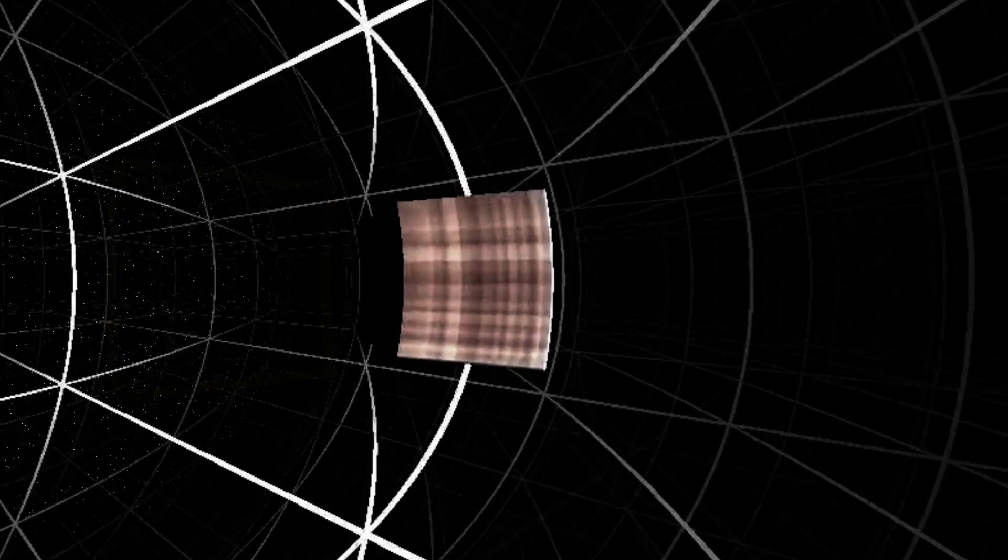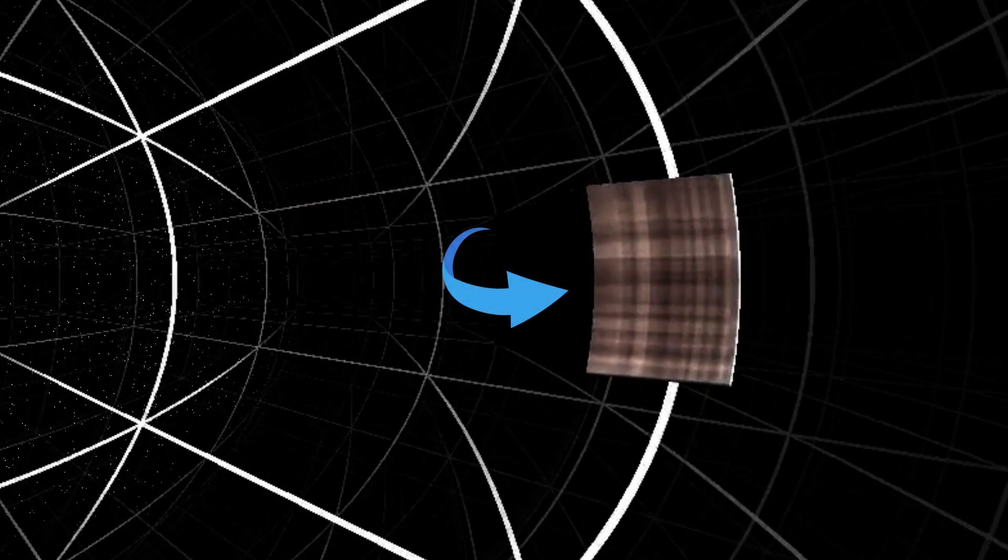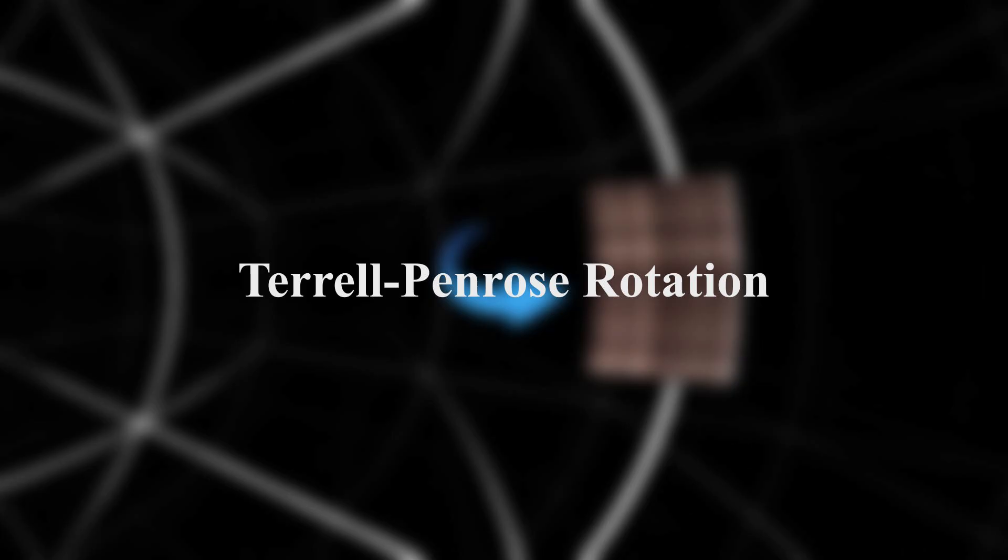If we were to pass by an object, it would appear slightly tilted toward us, due to an effect called the Terrell-Penrose rotation.